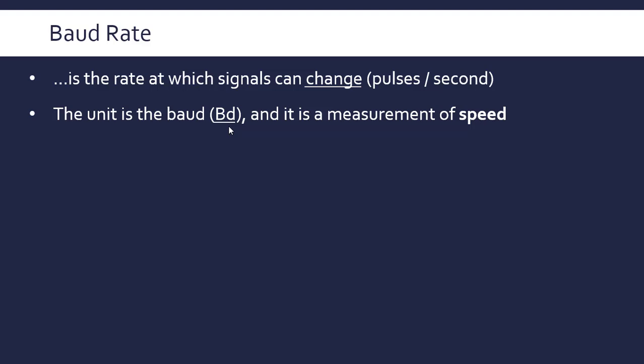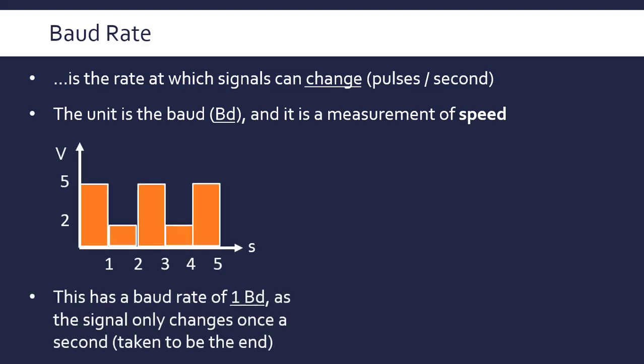The unit is the baud, BD, and it's named after a French engineer called Baudot who created the predecessor to ASCII, so really important for more than one reason. The baud rate is used as a measurement of speed.